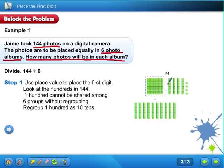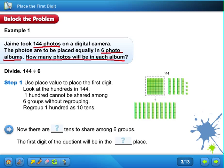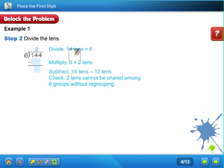So now I have ten tens and four tens, and then I have four ones. So this is now this, plus I still have these little ones over here. Now there are how many tens? How many tens do I have? Well, I just said I have these ten plus these four, so I have fourteen tens to share among six groups. The first digit in the quotient will be in the blank place.